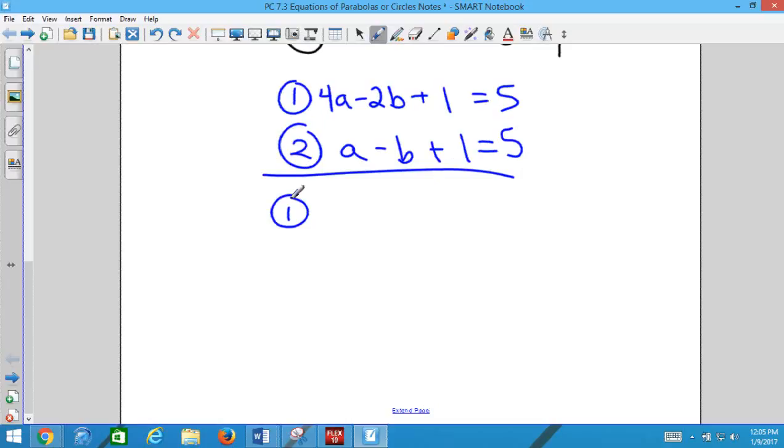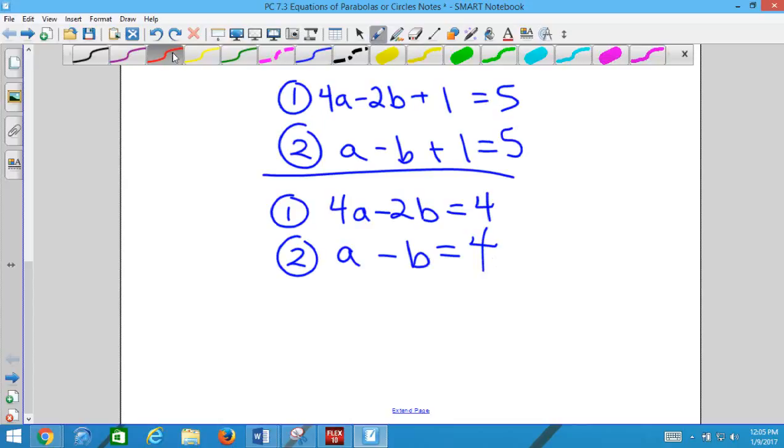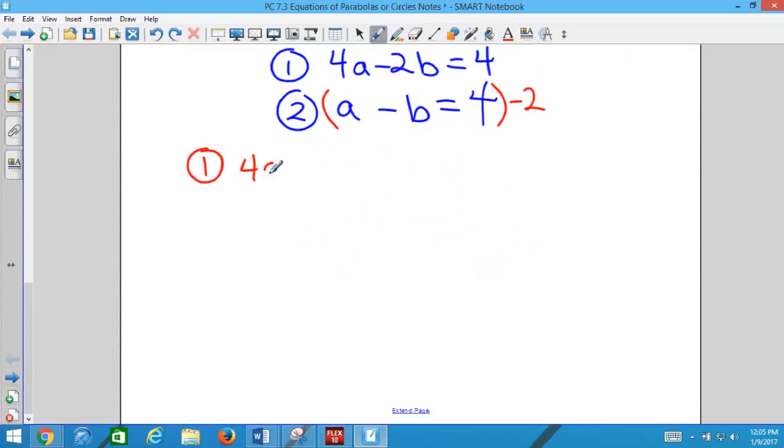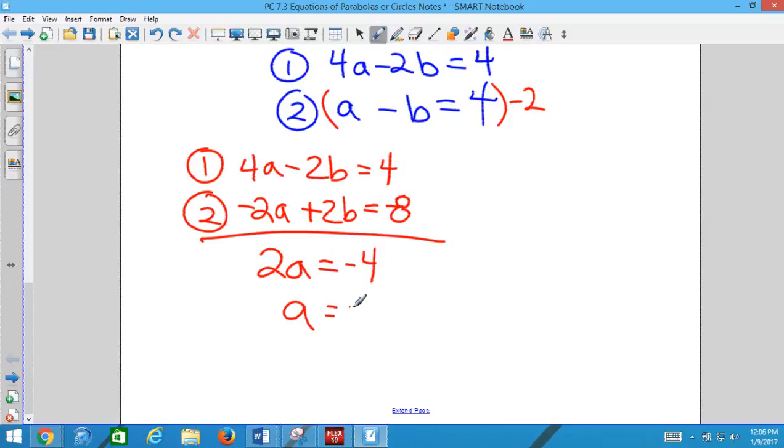So, if I plug in c into one and two, we've already gotten rid of one variable. We need to get two equations with two variables. You're telling me to multiply. I heard multiply. This one by negative two? Okay. So, then equation one is still the same. And equation two would be -2a + 2b = -8. Add them together and we get a = -2.